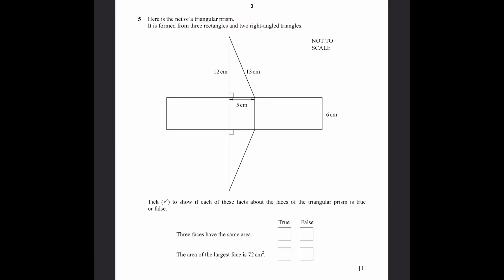Question 5. Here's the net of a triangular prism. It's formed from 3 rectangles and 2 right-angled triangles. Tick to show each of these facts about the faces of the prism is true or false. Three faces have the same area. Well, the answer here is true. Let's find the area of all the faces. We know that this length is going to overlap with this one over here, touching this edge. Therefore, this is 13 centimeters. And same for this. This one here is going to be 12 since it overlaps with these edges of the triangles. This has to be congruent to this triangle over here. Therefore, we have 12, 13, 5.